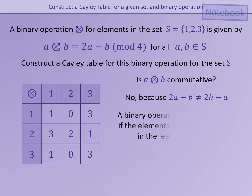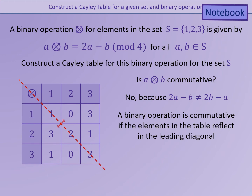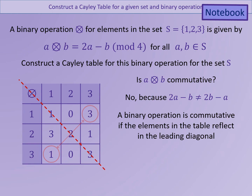We can also tell from the Cayley table if a binary operation is commutative — the elements will be symmetrical in the leading diagonal, meaning reflecting in the leading diagonal gives the same elements. This is because interchanging a and b would make no difference. In this case, we can see that it is not symmetrical in the leading diagonal, so the binary operation is not commutative.